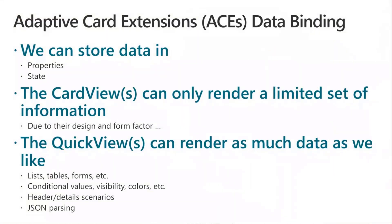A few words on this slide and then we will move to the actual demo. Whenever we work with adaptive card extensions, we can store content inside the properties or the state of the adaptive card extension. Once we do that, we can easily do data binding either in the card views - though card views have a limited set of information due to design and form factor - or in quick views, where we can do a lot more.